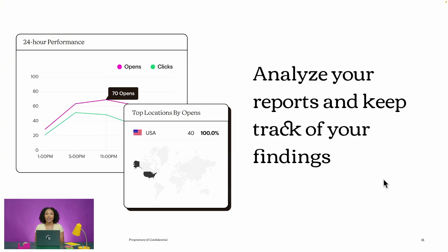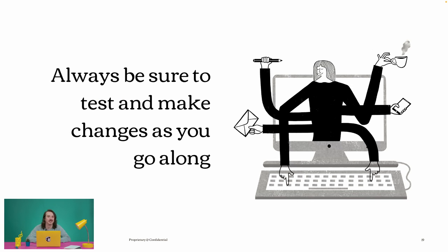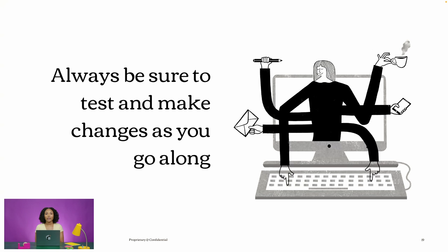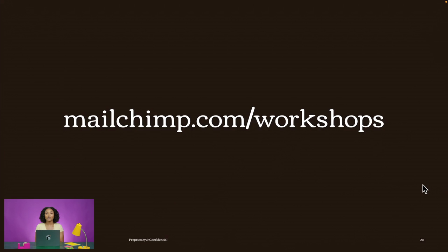Analyze your data to see what's working. After sending a campaign, your reports can help you understand the best times to send, as well as what subject lines and content your audience is responding best to. Always test and make changes as you go — before you send, proof your content and send your campaign to test volunteers like other members of your team. The more you test, the more you get to know your audience and what they find relevant.